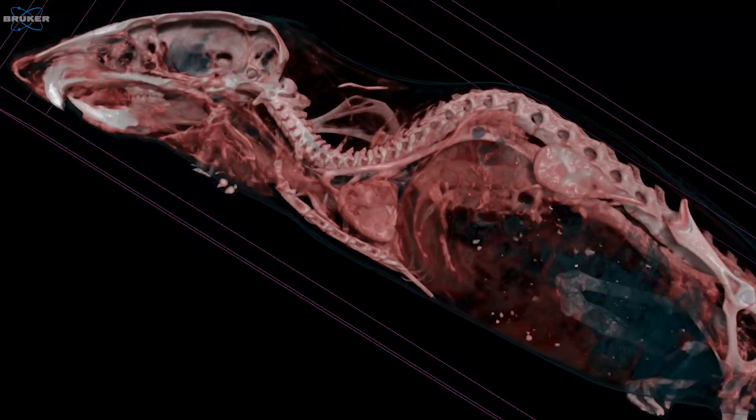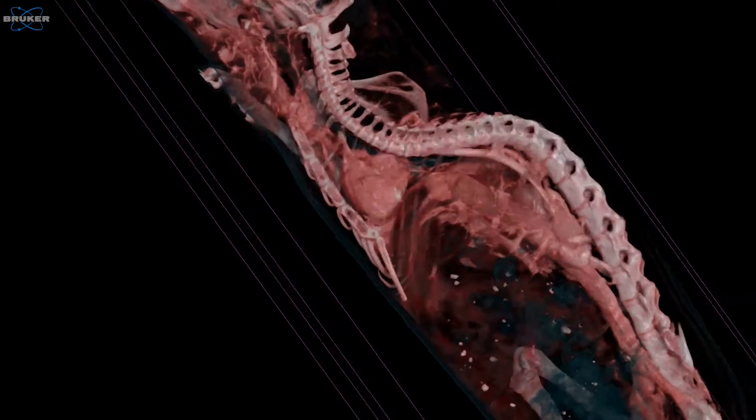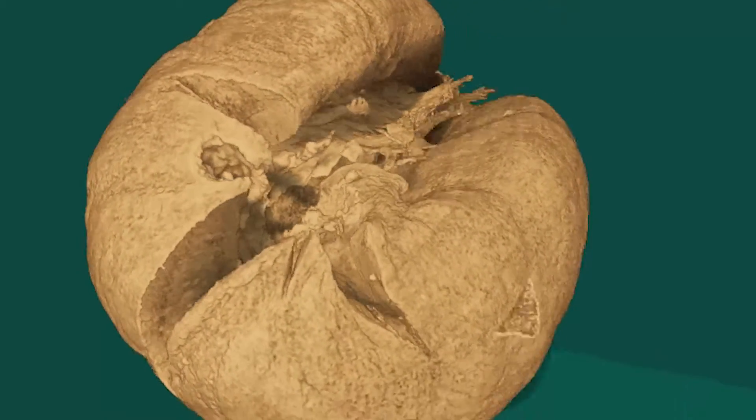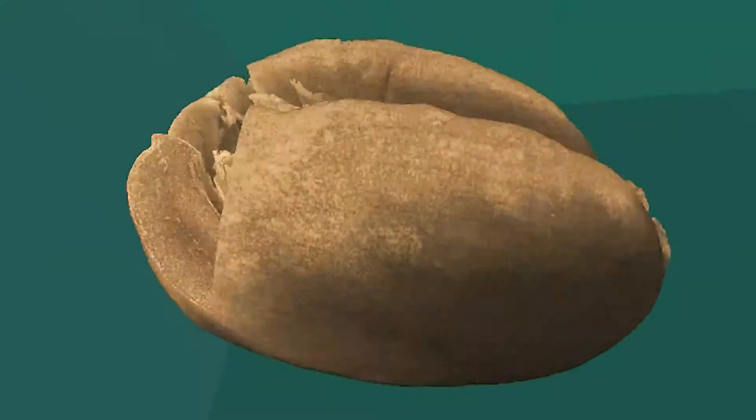In forensics, micro CT has made a difference in some criminal court cases, actually producing evidence that makes a difference in finding out about a homicide case, for example. In the food industry, things we might buy in a supermarket – we have a number of customers in the food area who get important information about the structure and porosity of food products.